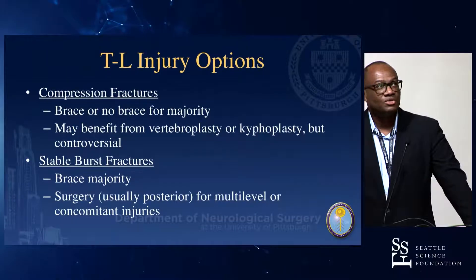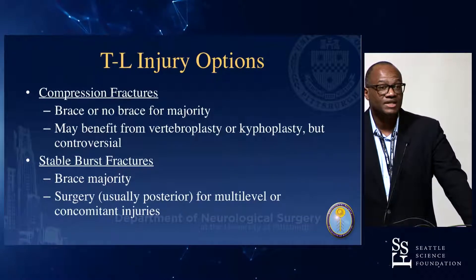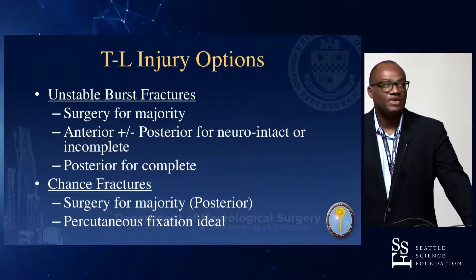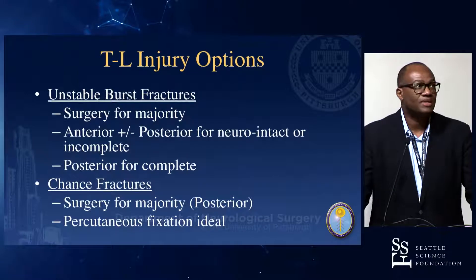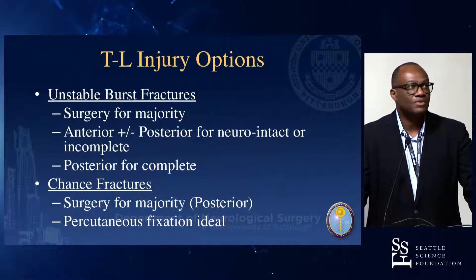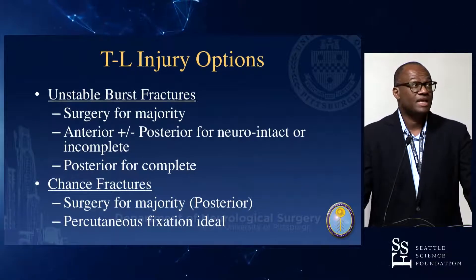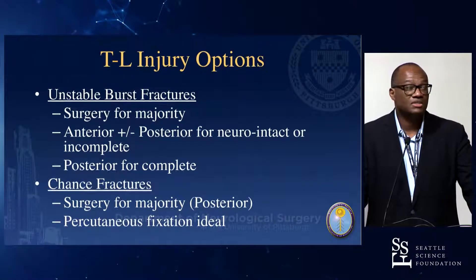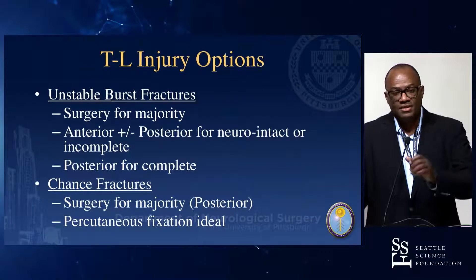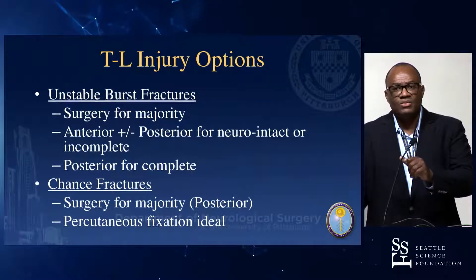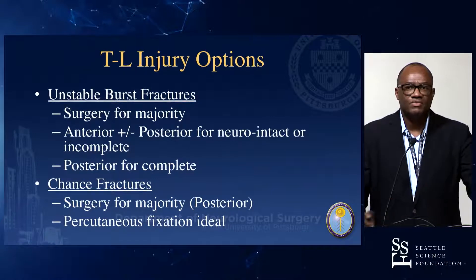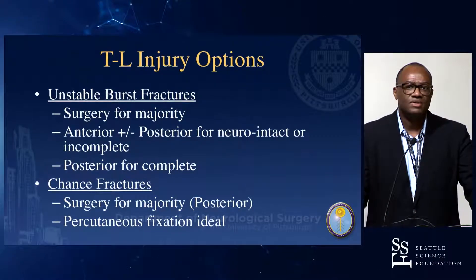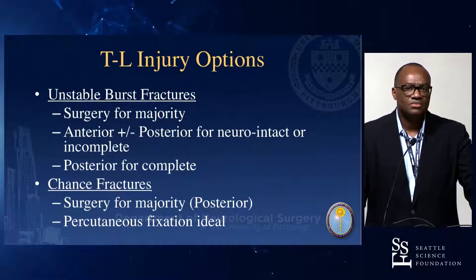Surgery is usually indicated for multi-level injuries or if you have other injuries — remember the qualifiers. For unstable burst fractures, typically you're getting surgery: anterior-posterior or posterior alone for near-intact or incomplete injuries, and also posterior for complete injuries with decompression and stabilization. If somebody has a complete injury and we're outside the window, why are we even doing surgery? Anyone have a concise answer?